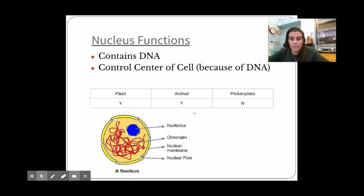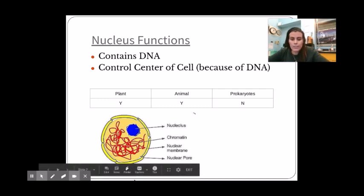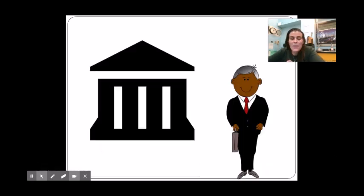A good way to think about the nucleus is to think of the DNA as the mayor, and then the nucleus is the town hall. So the mayor makes the decisions, but the town hall, the building, surrounds and protects the mayor. So the nucleus is your control center of the cell.